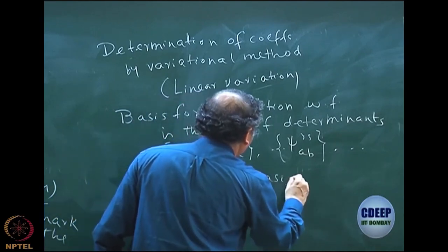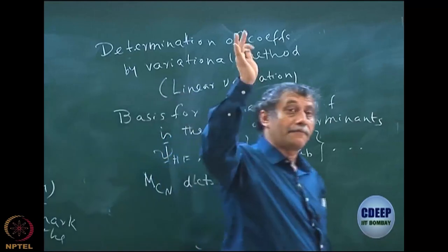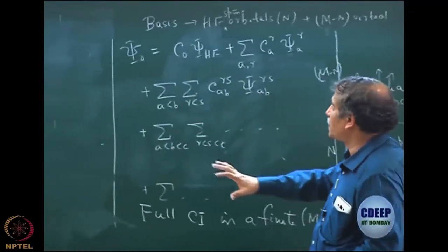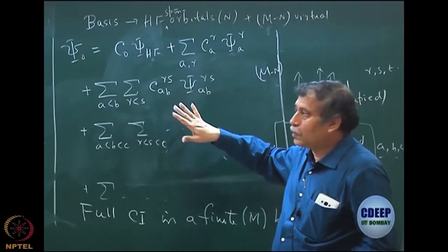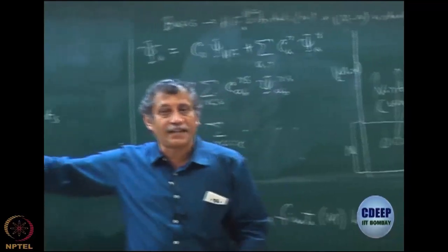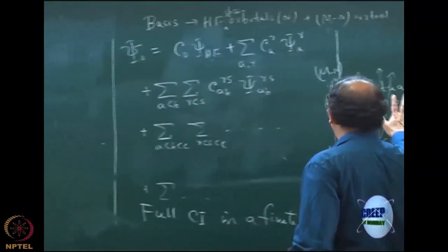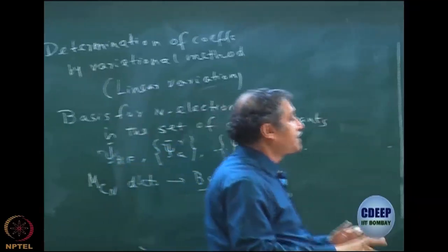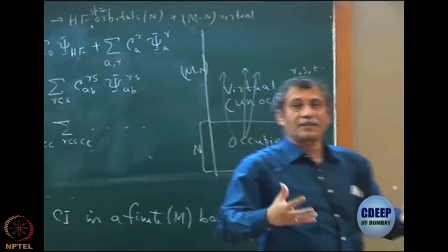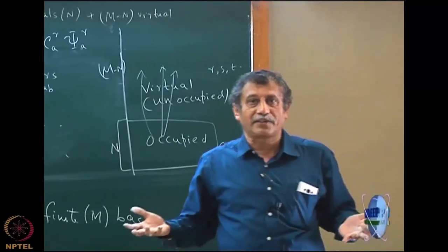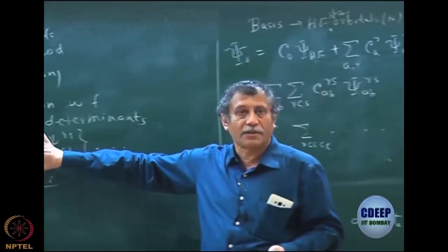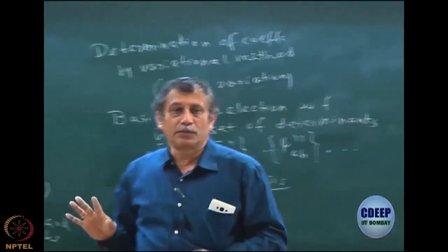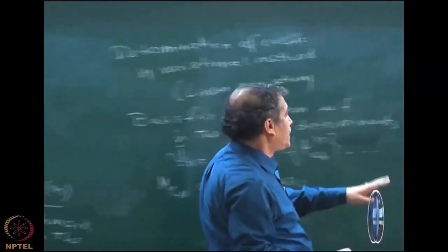The MCN determinants are my basis for the n-electron wave function. When we apply linear variation, the exact wave function is a linear combination of a known set of functions — the basis — which are these determinants. Do not get confused between the one-electron basis and the basis for the n-electron problem. The determinants are the basis for the n-electron problem; spin orbitals are the basis for the one-electron problem. For an n-electron problem, the basis must also contain n electrons — each determinant has n electrons, so they become the basis. In that sense, this problem is exactly identical to the linear variation problem.